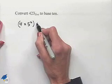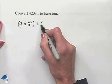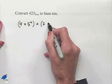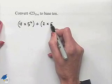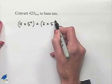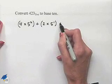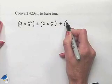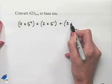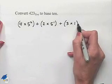We'll add to that our digit 2 multiplied times 5 to the first, and then add to that our digit 3 multiplied times 1.